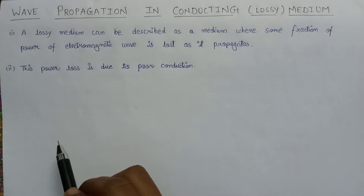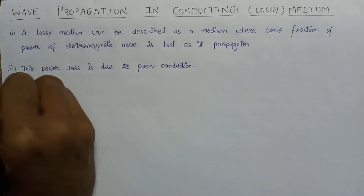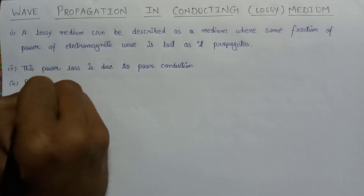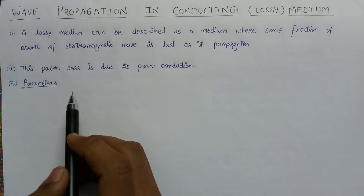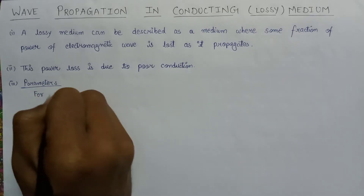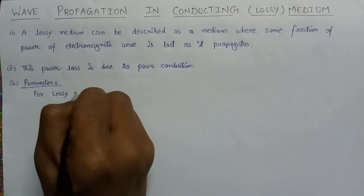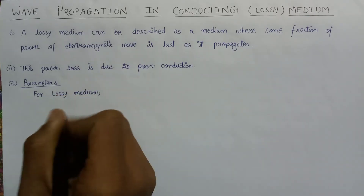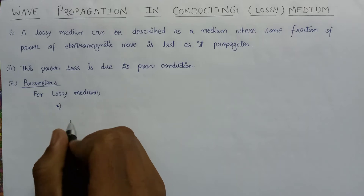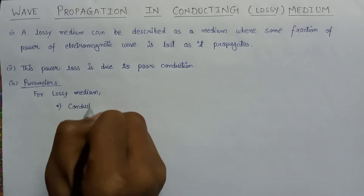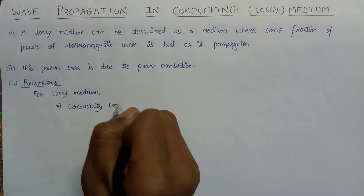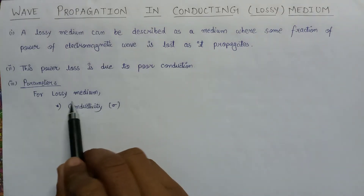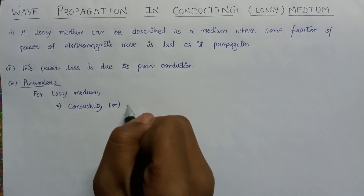Now let us discuss some parameters on which the propagation of a wave in the conducting medium depends. The parameters associated with the lossy medium are: the first parameter is conductivity, which can be represented as sigma. If the wave is propagating in a lossy medium, then its conductivity will neither be equal to zero.